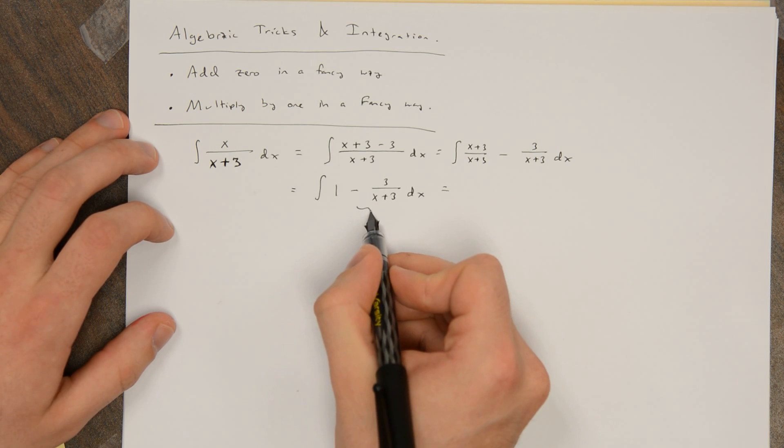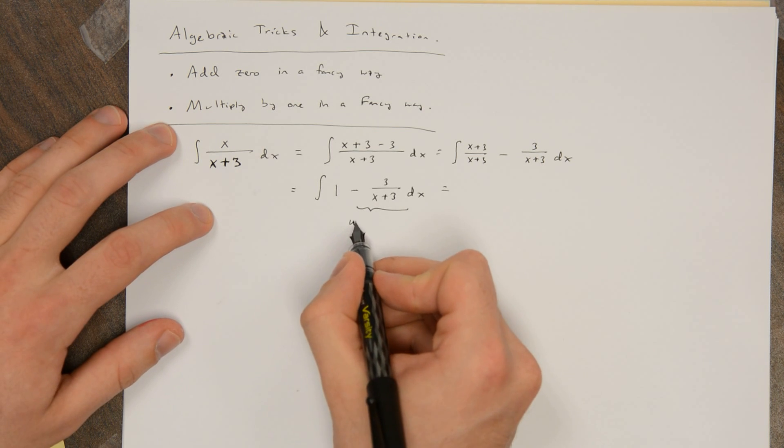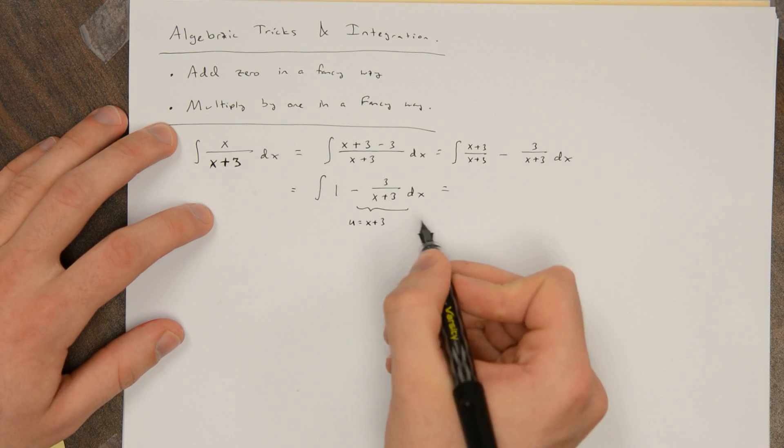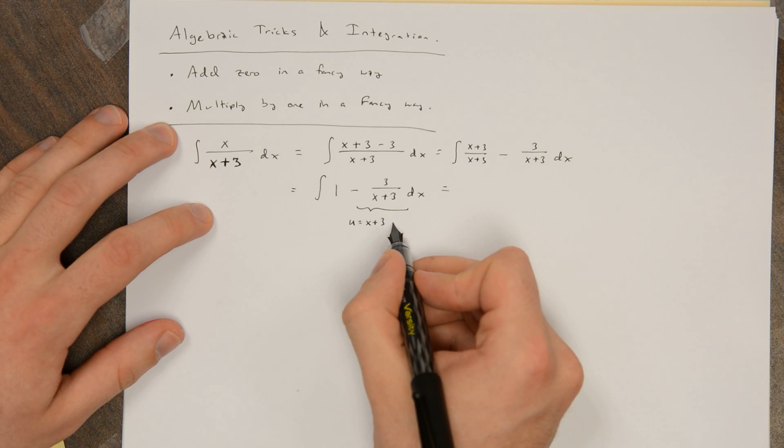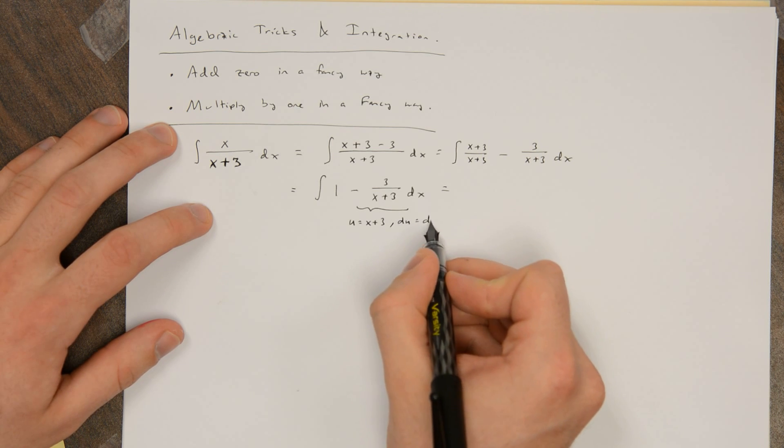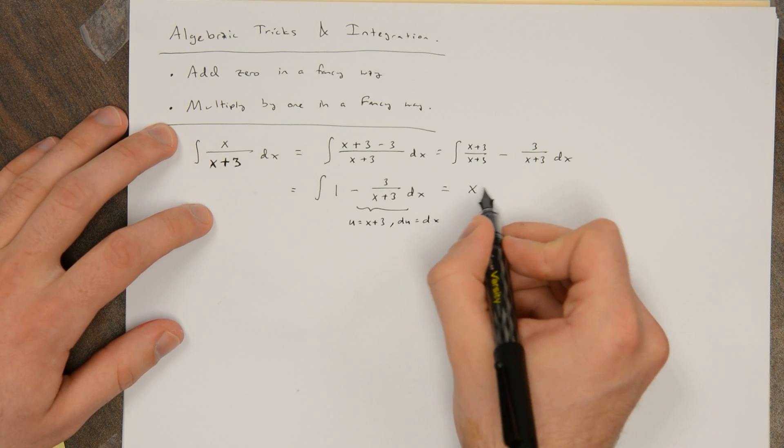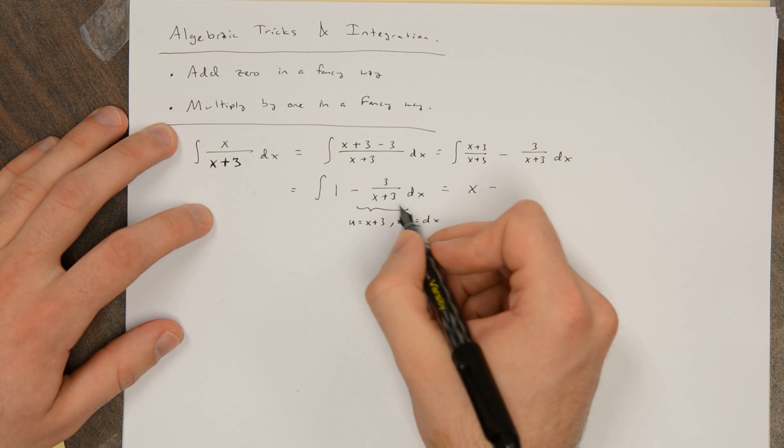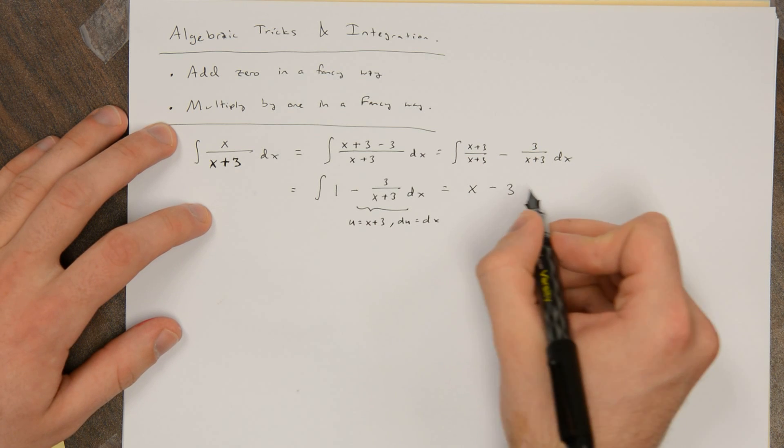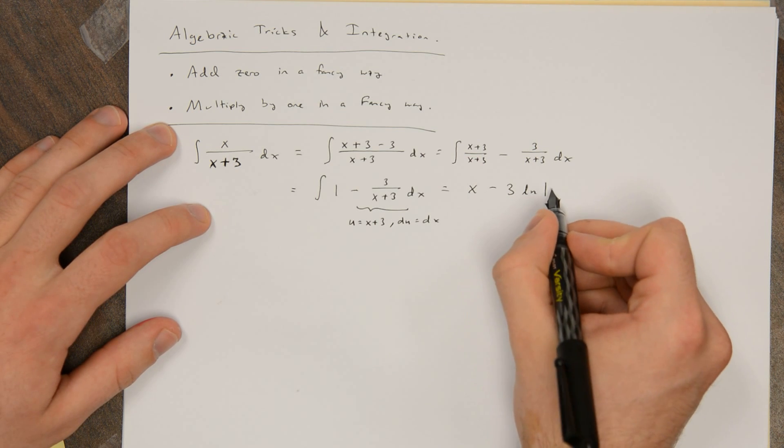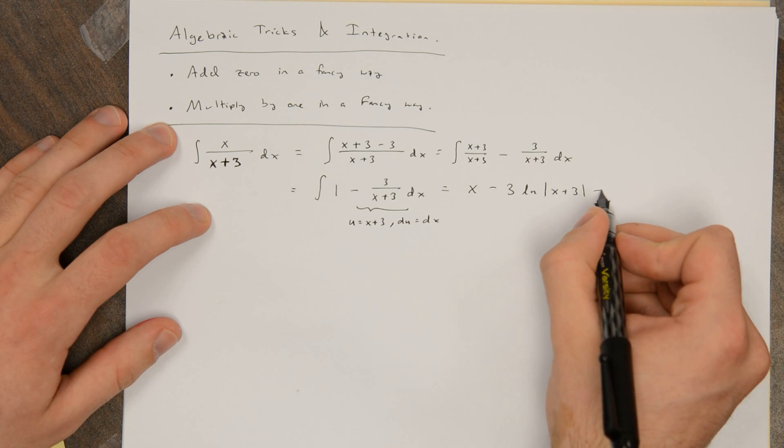This piece is a nice easy substitution. u is equal to x plus 3, so du is dx. So this is just 1 minus 3 the integral of 1 over u du. So this is x minus 3 ln the absolute value of x plus 3 plus c.